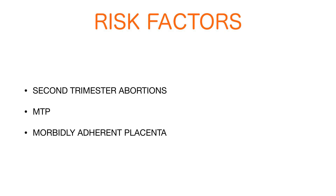What are the risk factors? Although it can occur in any pregnancy, the pregnancies predisposed are: second trimester abortions, MTP (medical termination of pregnancy), and morbidly adherent placenta. These three are the risk factors wherein persistent trophoblastic tissue is seen, as the body is not able to expel the whole placenta in these conditions.